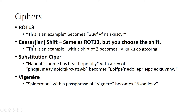A Caesar shift, or Caesarian shift, is exactly the same as ROT-13 except you choose the amount of letters you're shifting by. 'This is an example' with a shift of two letters becomes V, J, K, U, K, U, C, P, G, Z, C, O, R, N, G. What's two letters after A? C. So you can see A becomes C, N becomes P, and so on. If you wanted to, you could do a Caesar shift of 16, and whatever comes 16 letters after A — that's what you'd replace it with.